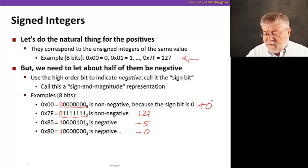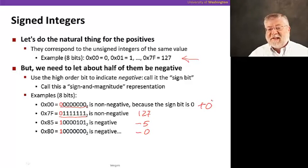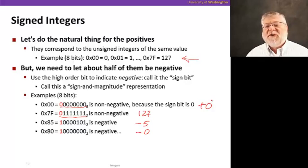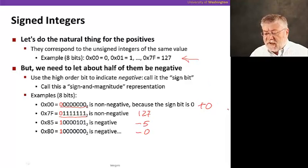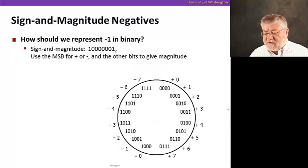The first line was the positive zero; this is the negative zero. They're really both zero, so this will cause some problems for us if we use this representation.